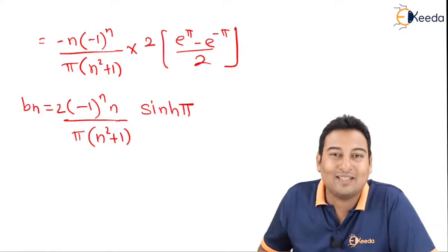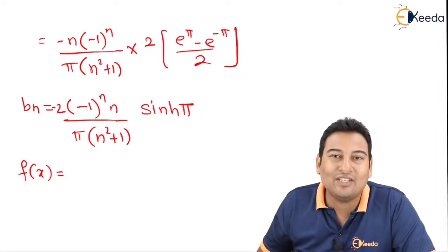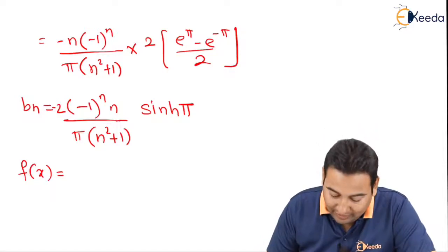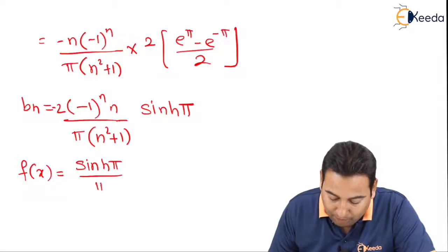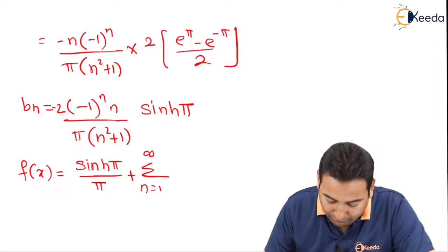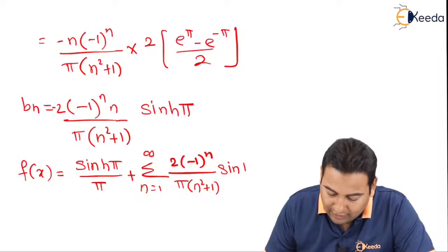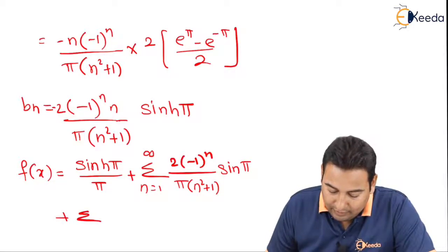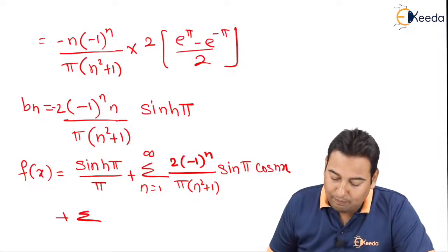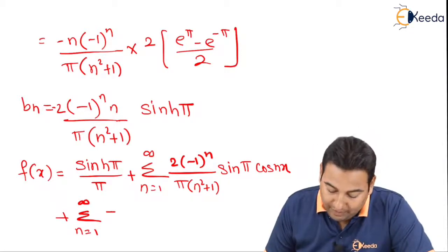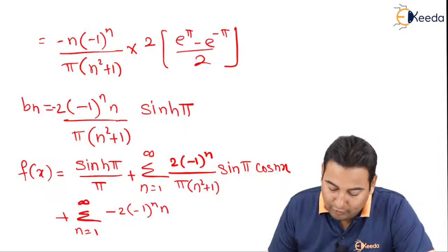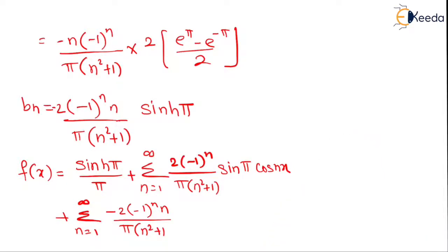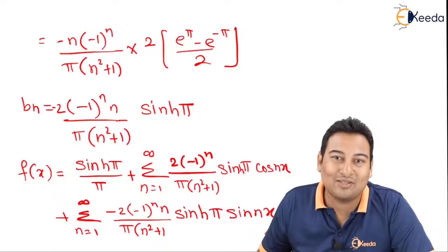Now let's put these values into the formula to get the result. f(x) = a₀/2 + summation terms. a₀ = (2/π)·sinh(π), so a₀/2 = sinh(π)/π. Plus summation from n=1 to infinity of aₙ·cos(nx), where aₙ = 2(−1)ⁿ·sinh(π)/[π(n²+1)]. Plus summation from n=1 to infinity of bₙ·sin(nx), where bₙ = −2n(−1)ⁿ·sinh(π)/[π(n²+1)]. This is the required solution for f(x) = eˣ. Hope you understood. Thank you.